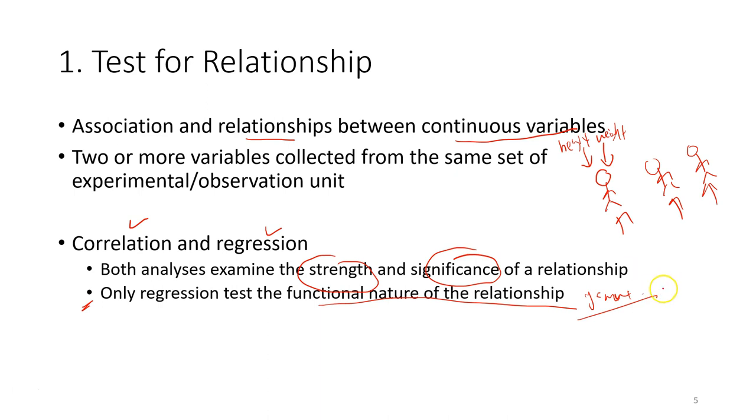As long as one of the variables is provided, you can actually predict the other variable. So they provide you a predictive model. That's the main difference between correlation and regression.